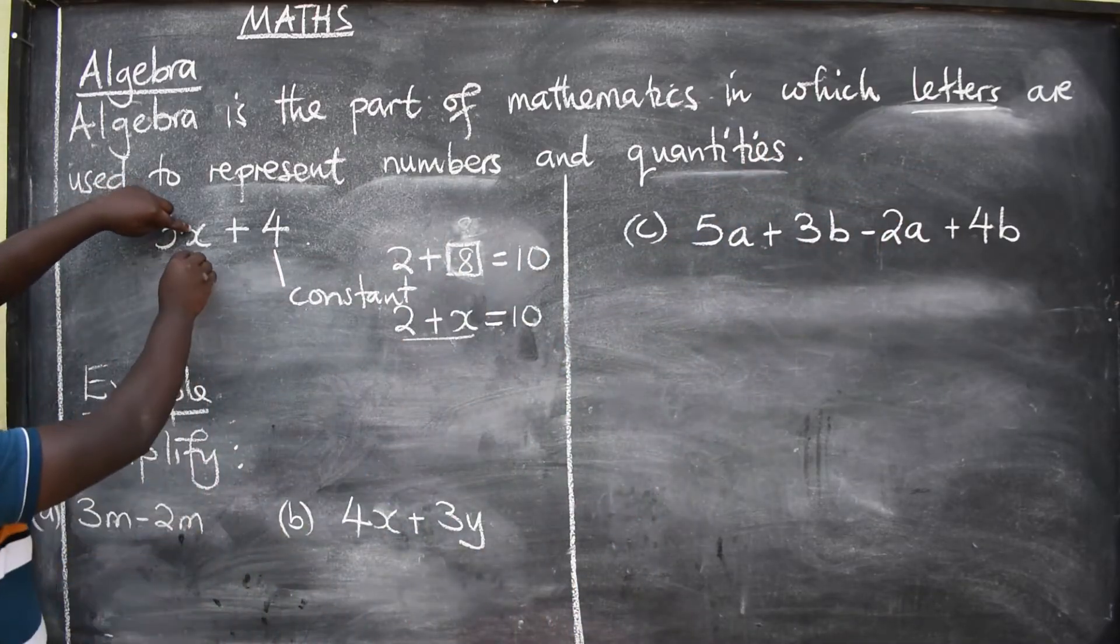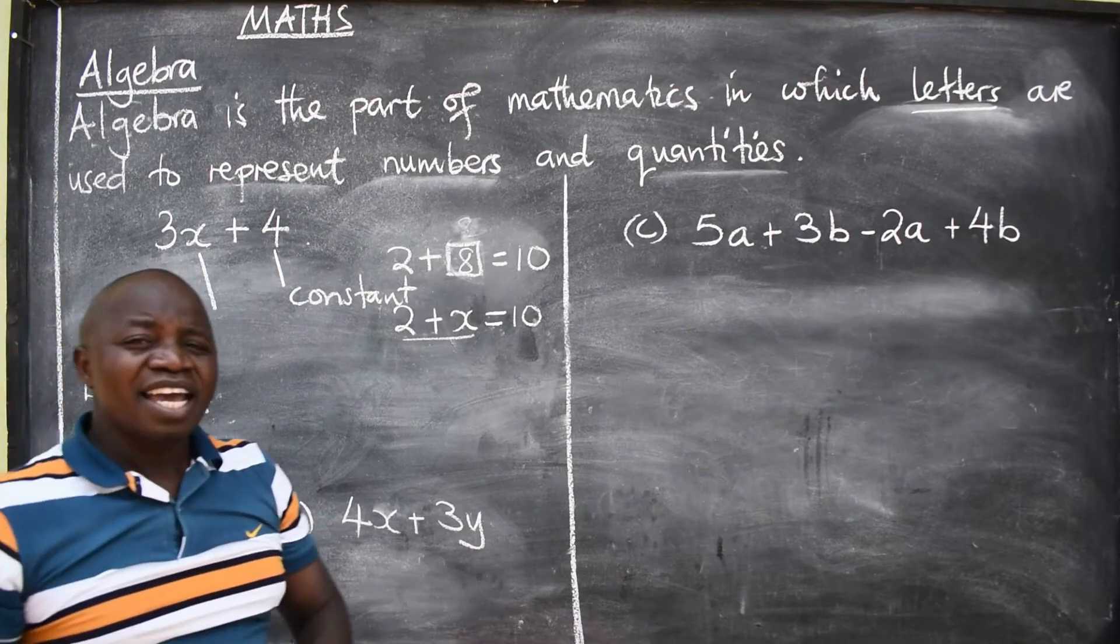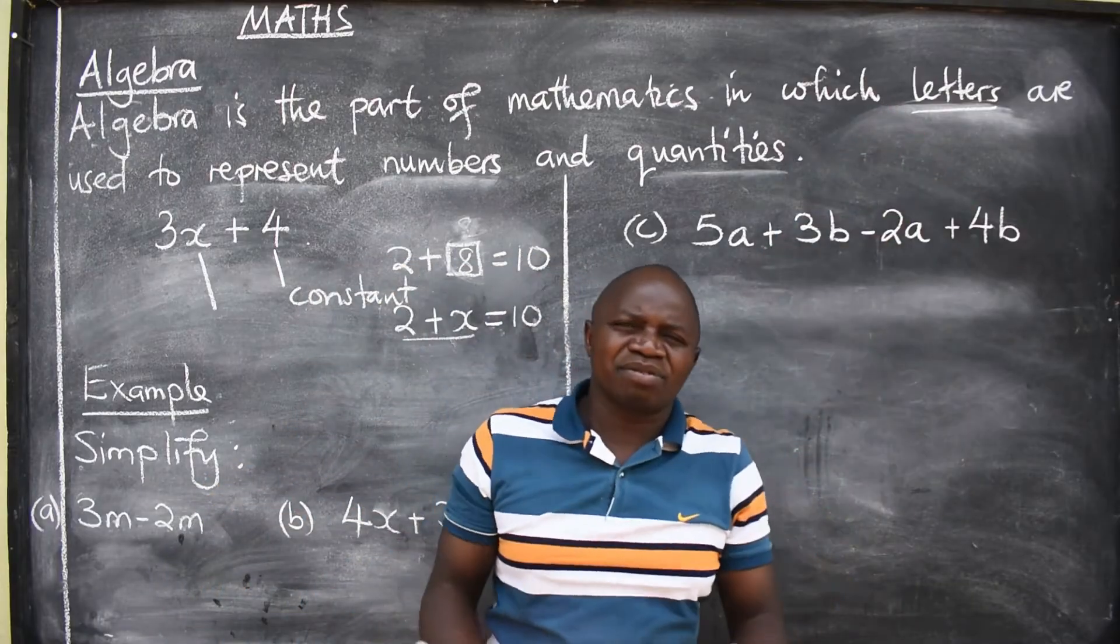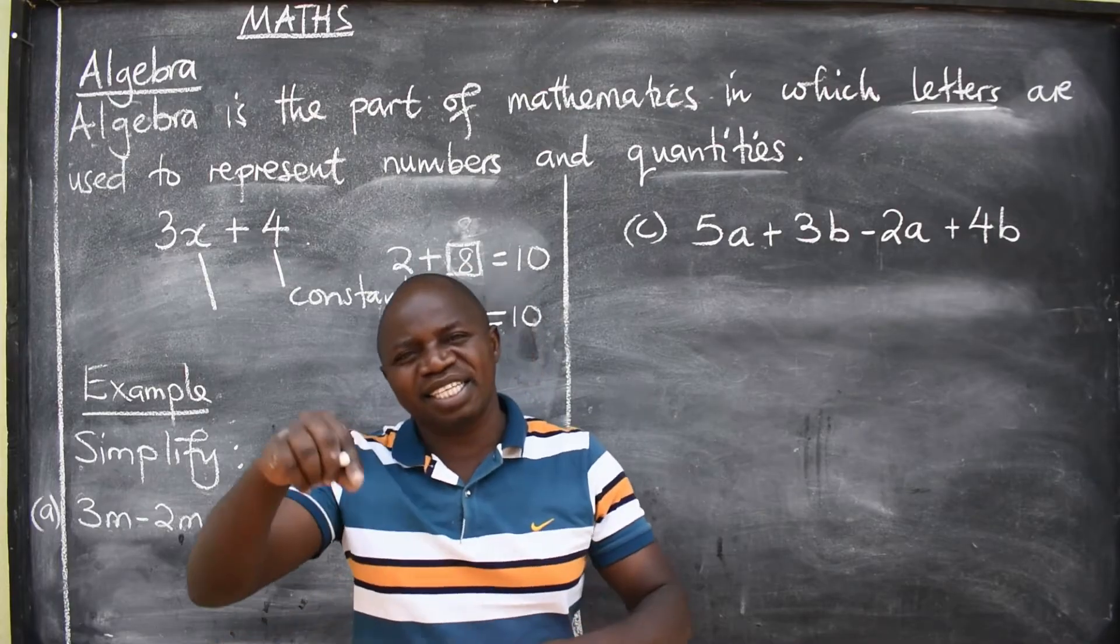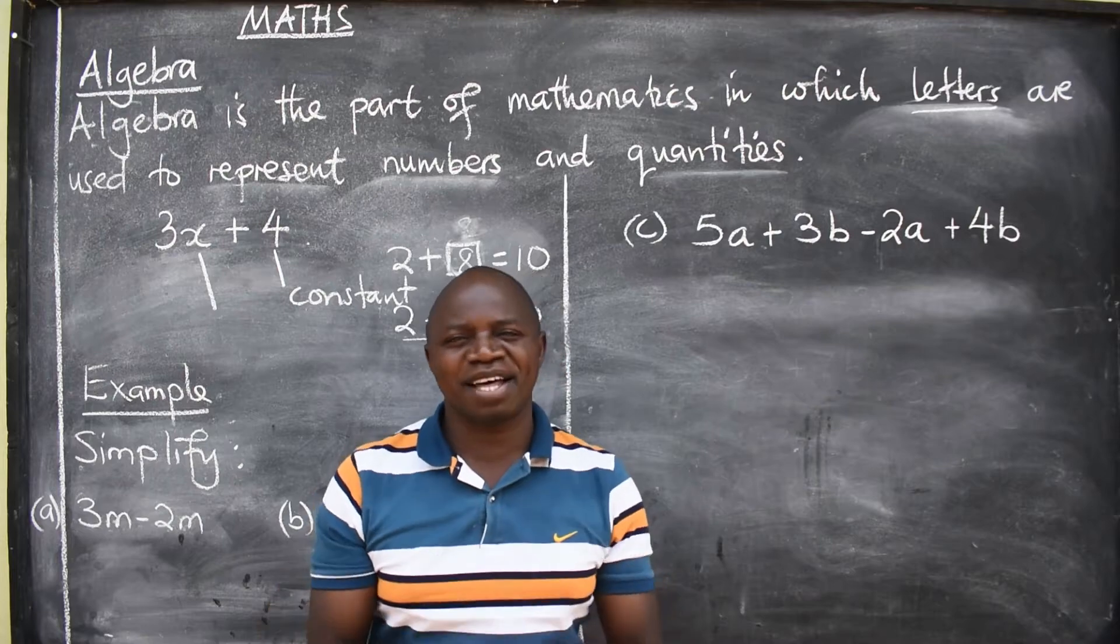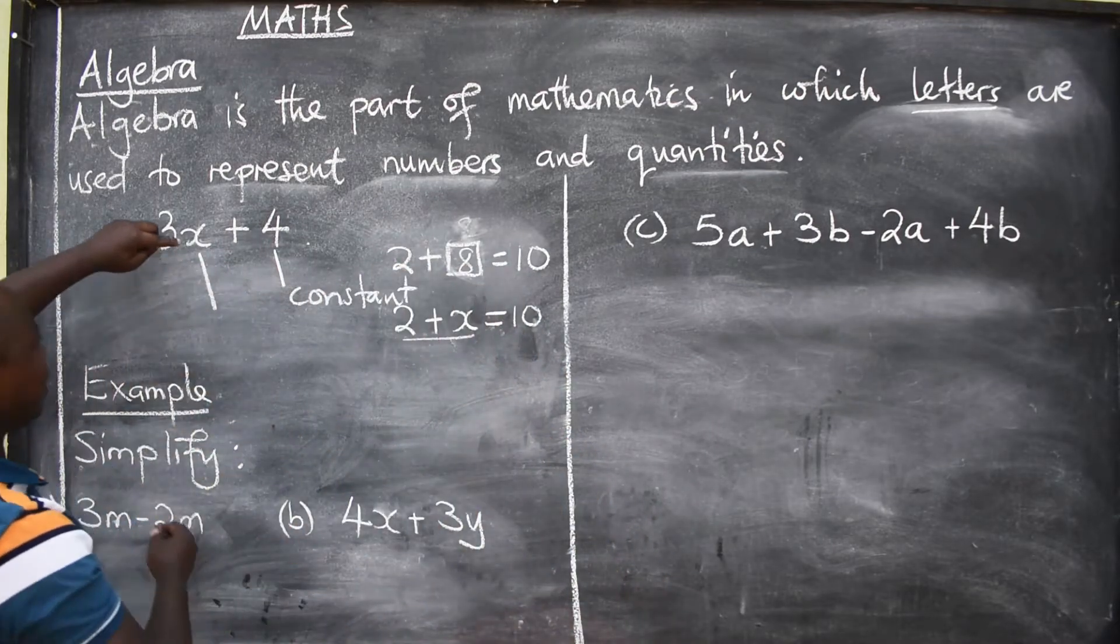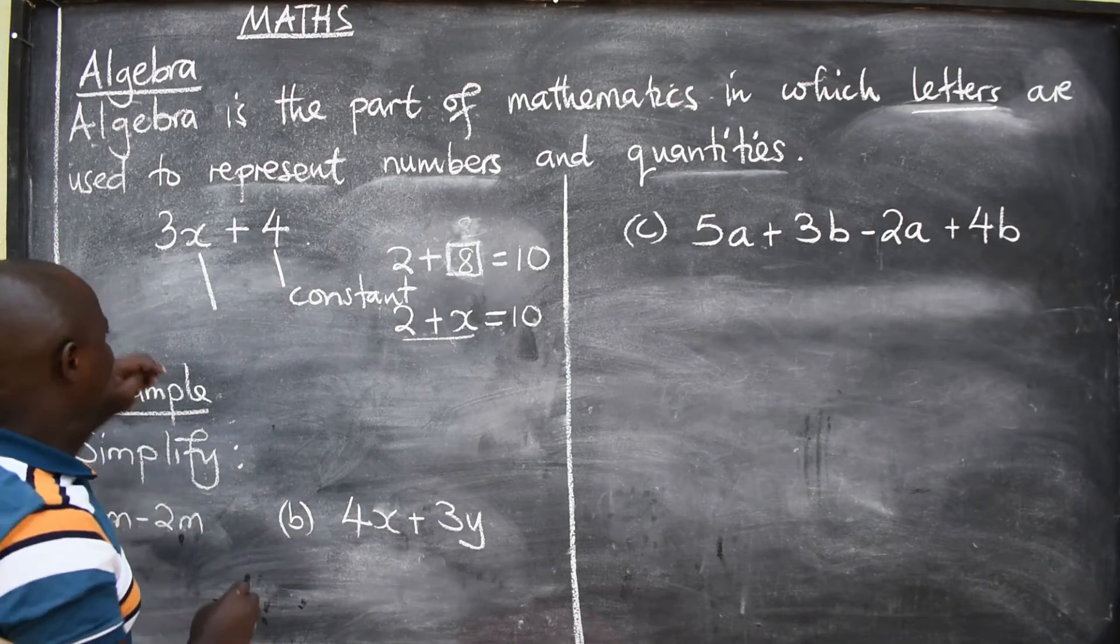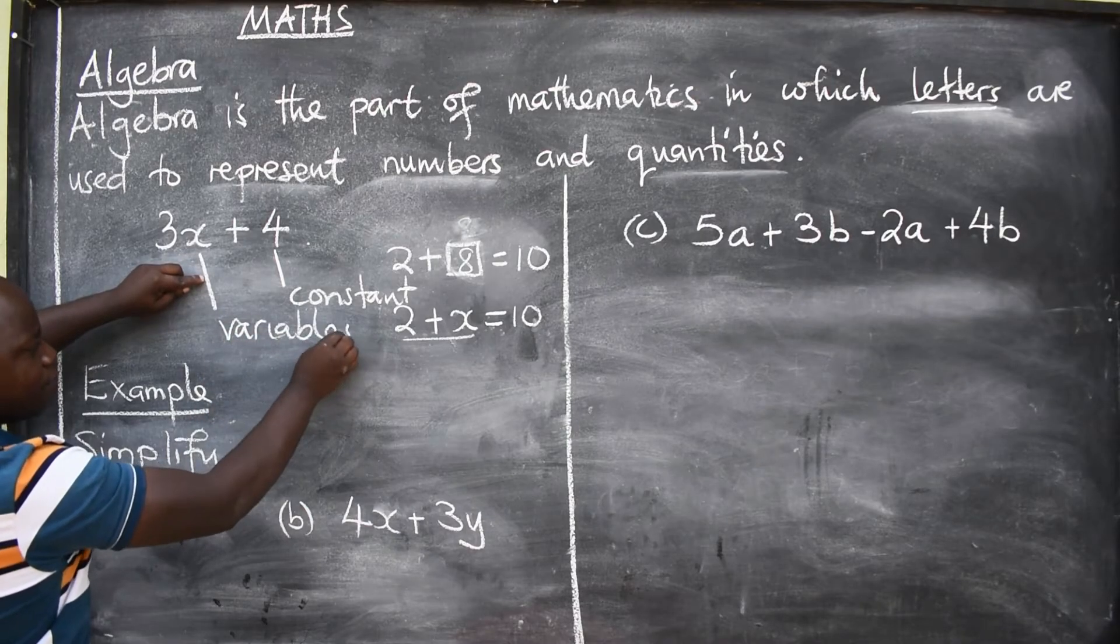Then, we also have these letters here. Have you seen? The letters. In mathematics, we will not be using the word letters. The 26 letters of the English alphabet. There's a special word that we use in mathematics. What is that special word? The special word for letters - it can be A, B, C, D, up to Z - these will be called variables.